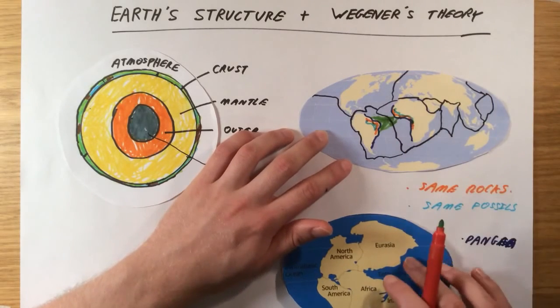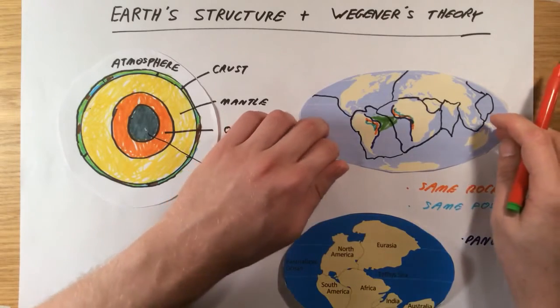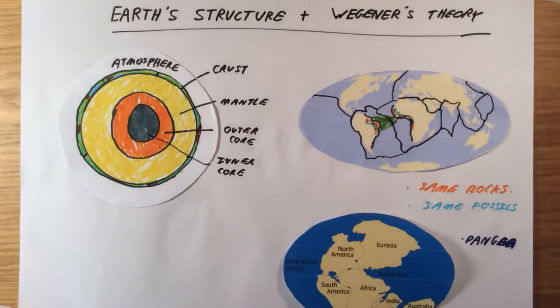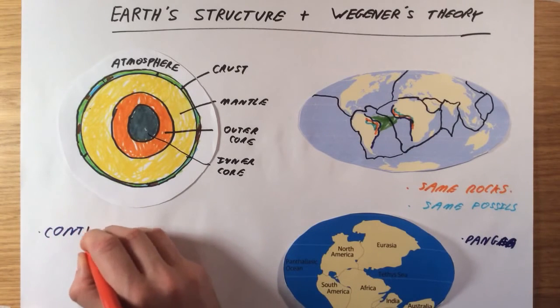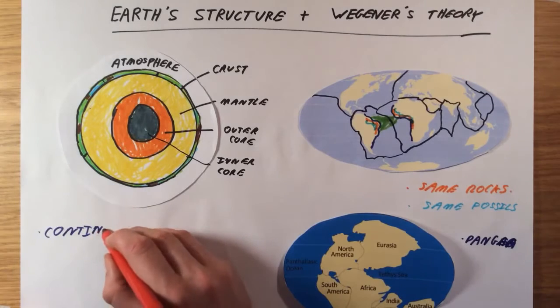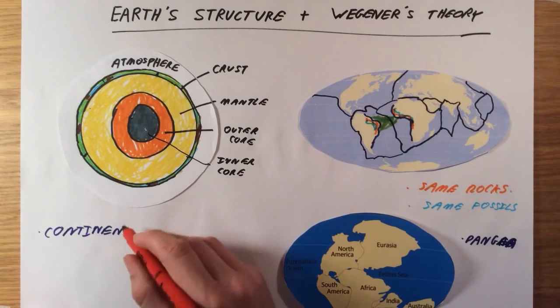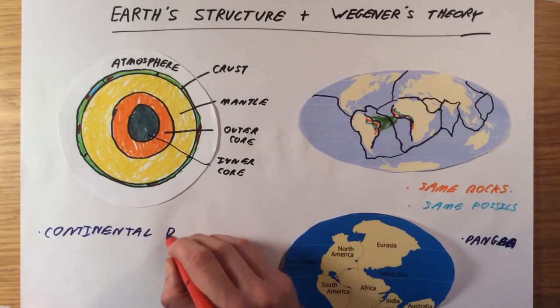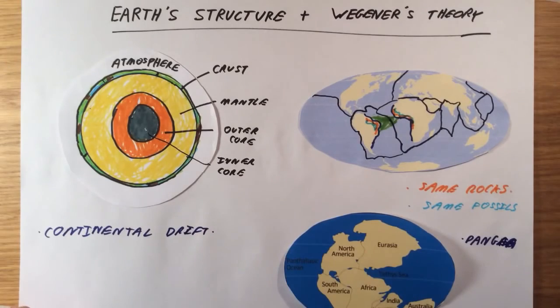Unfortunately, he was never able to prove his theory about how the continents had moved apart and it was only much later that the theory of continental drift was discovered. So scientists have now managed to prove that the continents, the tectonic plates, are moving at a very slow rate of just a few centimeters a year, and what they found is that it works like this.